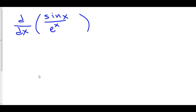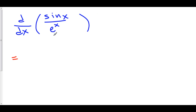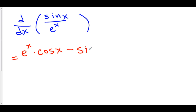Here we have the derivative of sine of x over e to the x. Using our quotient rule, we have low, which is e to the x, d high — the derivative of sine of x is cosine of x — minus high, which is sine of x, d low — the derivative of e to the x is just e to the x.